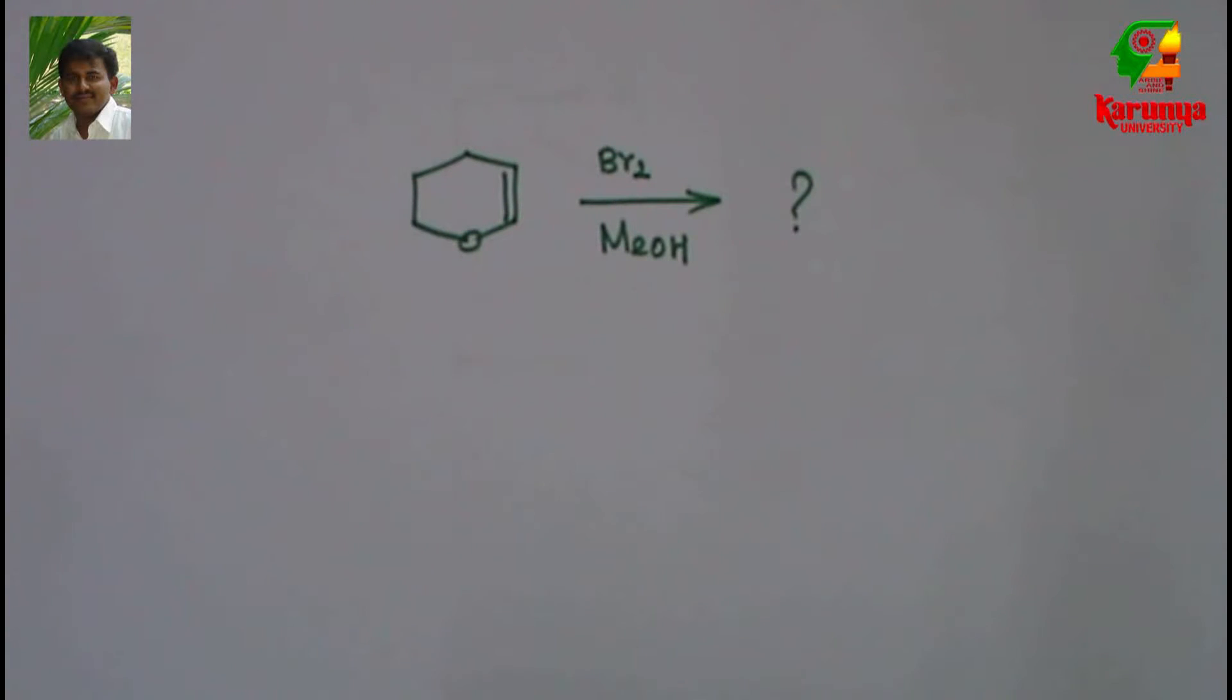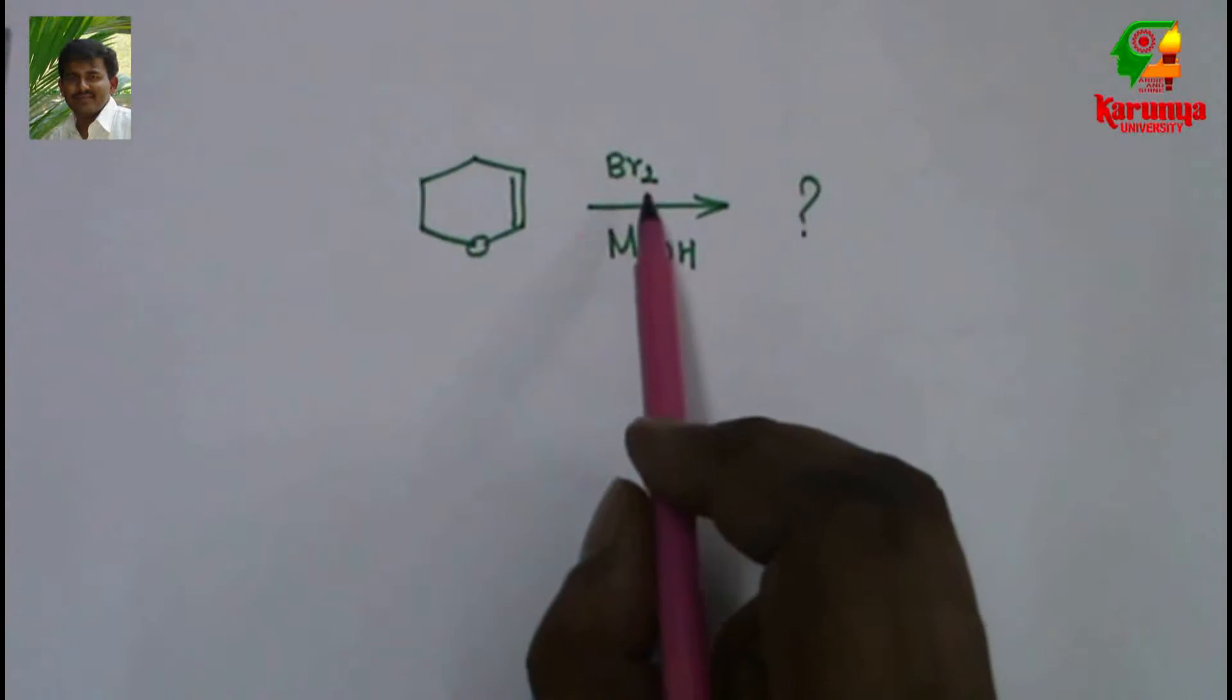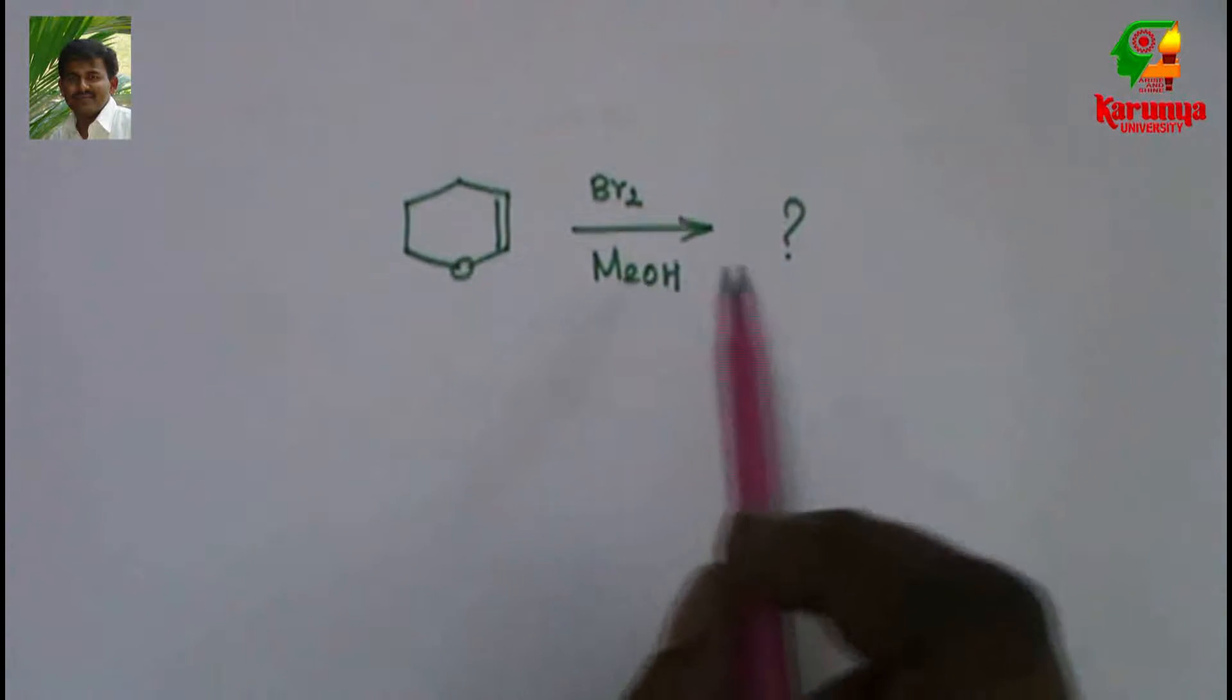Here is the problem: when this vinyl ether is treated with bromine in methanol, what is the product?